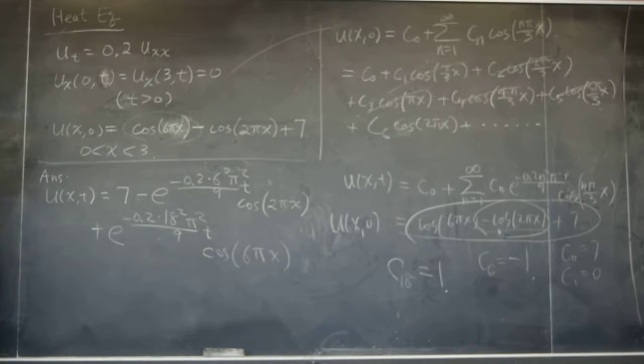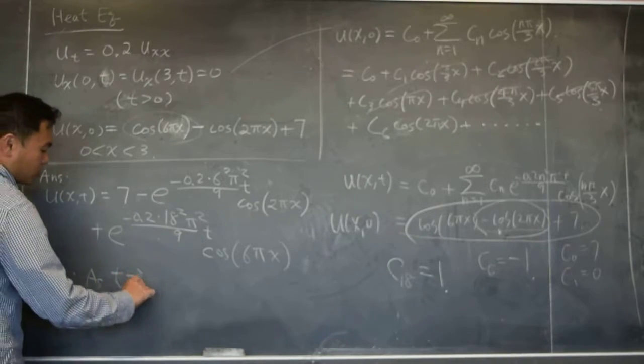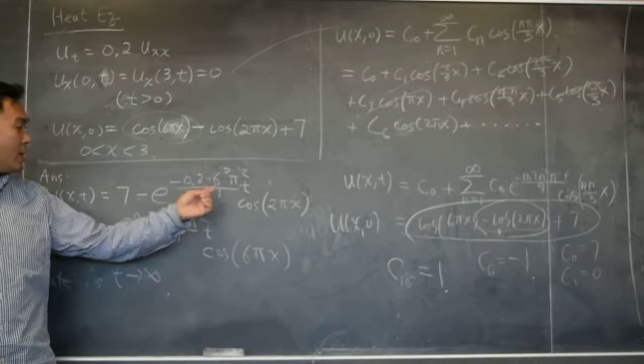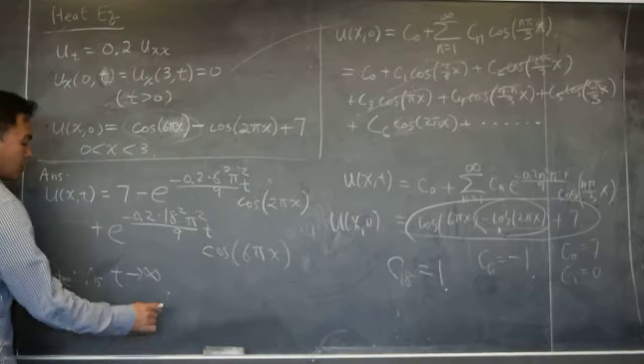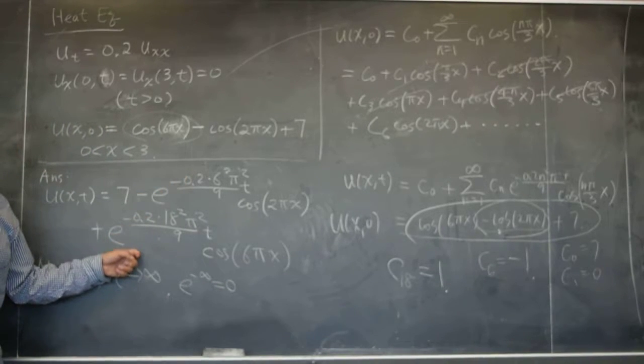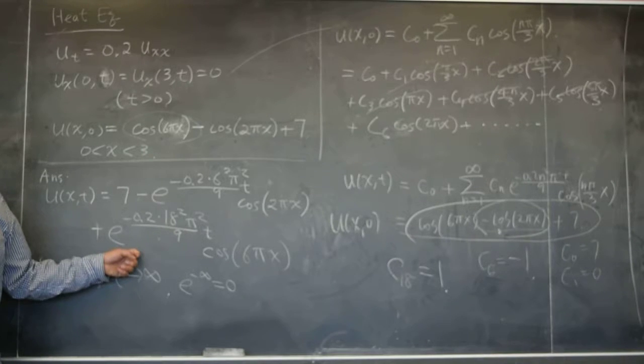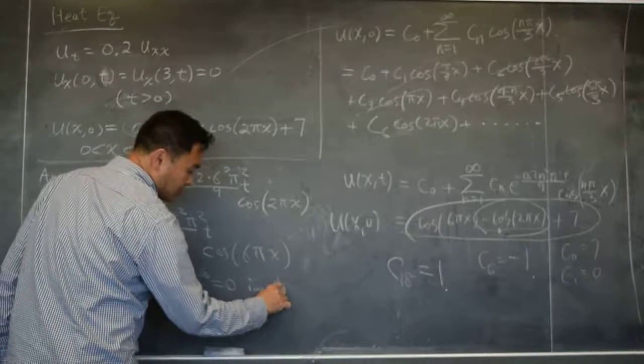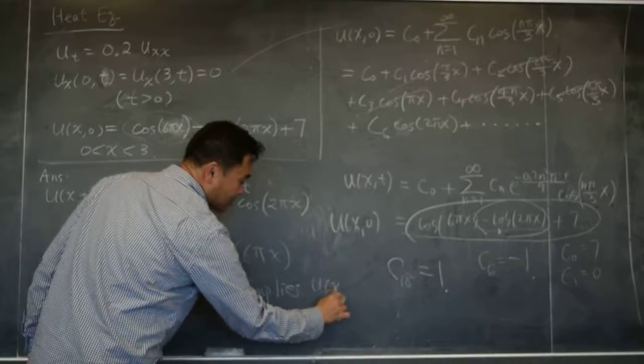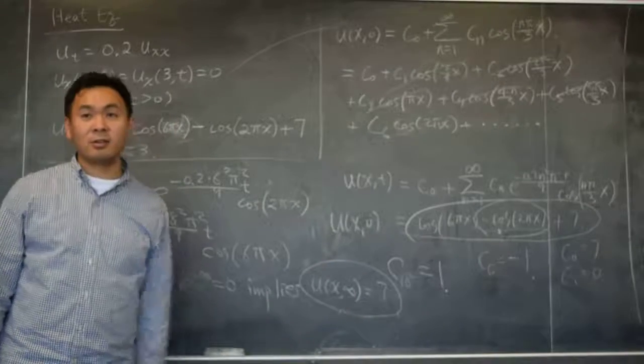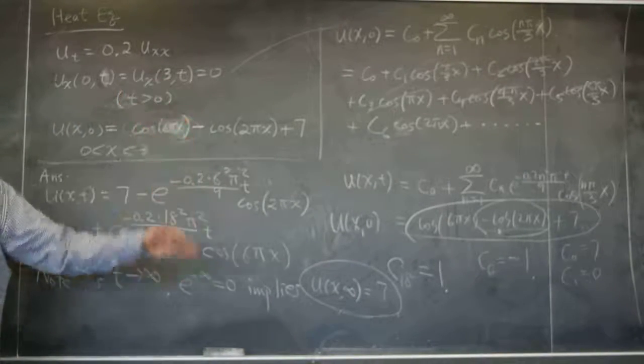Now let's think about what happens. Note, as t goes to infinity, what happens to this one? You get e to negative of something huge, right? E to negative infinity is 0. So this becomes 0. That becomes 0. So what do you get for u(x,t)? 7. It implies u(x,∞) is 7. So when time goes to infinity, you get a uniform heat distribution of 7. That's what we see.